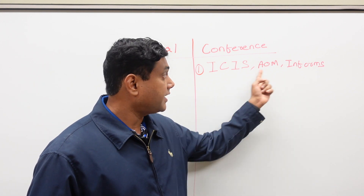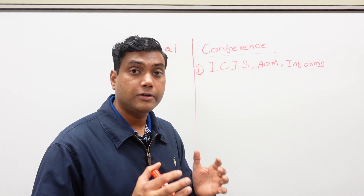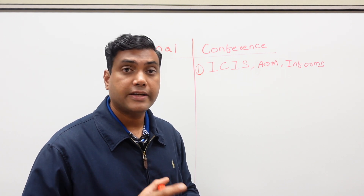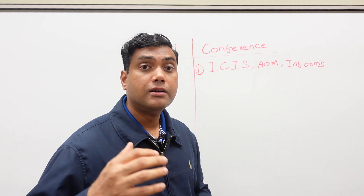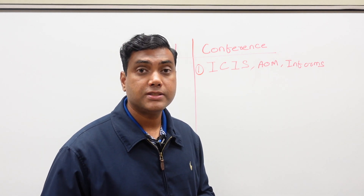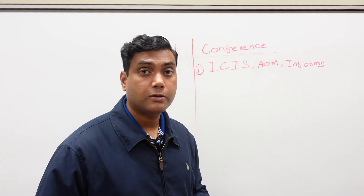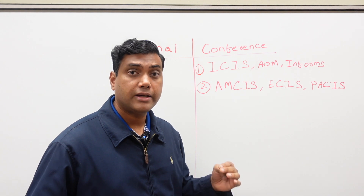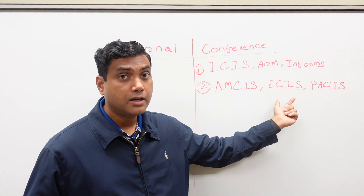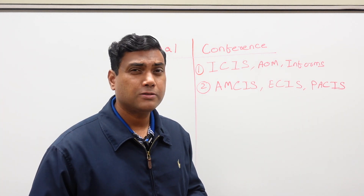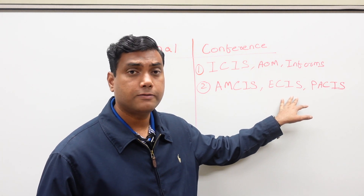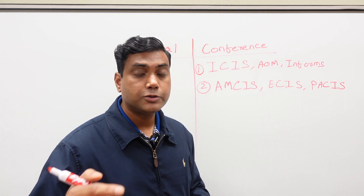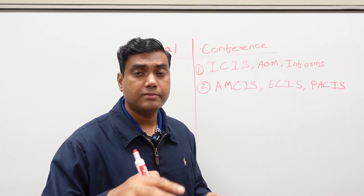A key difference between ICIS and AOM is that ICIS is specific to information systems, whereas the Academy of Management represents other fields as well, such as marketing and psychology. The second tier includes large regional conferences: America's Conference on Information Systems, Asia Pacific Conference on Information Systems, and European Conference on Information Systems. ACIS covers North and South America, ECIS includes European countries, and PACIS — the Pacific Asia Conference on Information Systems — is attended primarily by people from Asian countries.